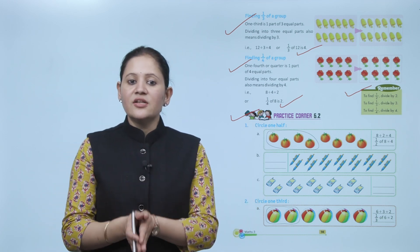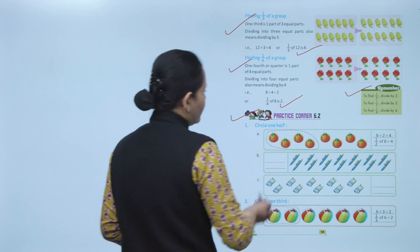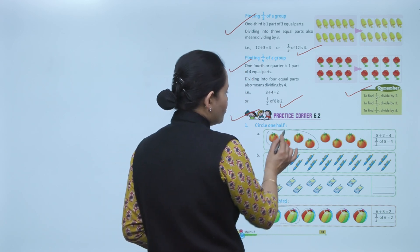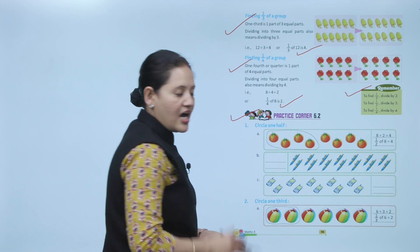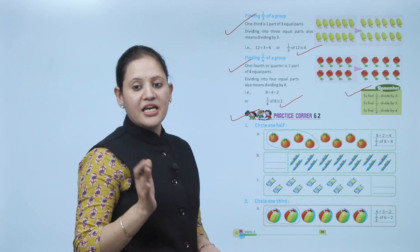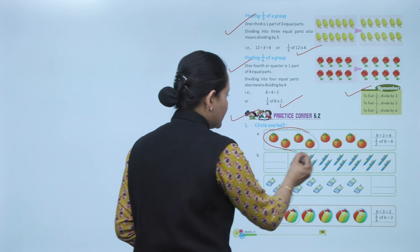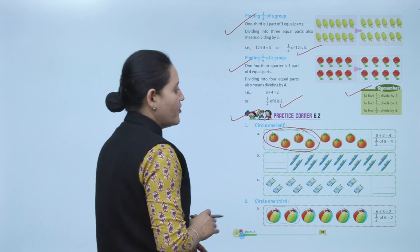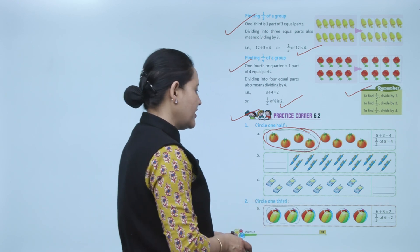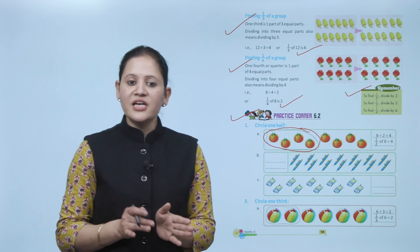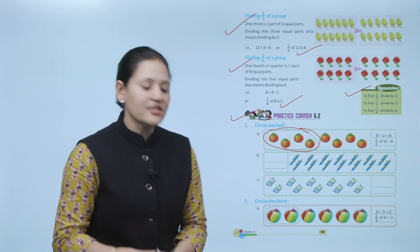Circle 1 half. Total number: 1, 2, 3, 4, 5, 6, 7, 8. Half means we will divide 8 by 2, that is 4. So this part represents 1 by 2. Here, 2 divided by 2 — this part will represent 1 by 2, or half. For 9, divide by 2.